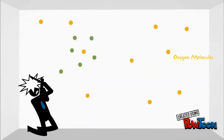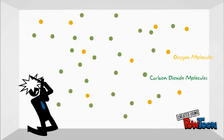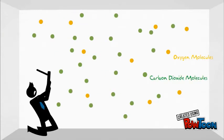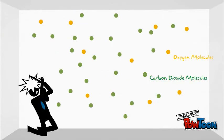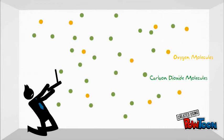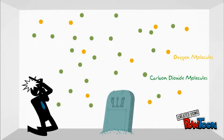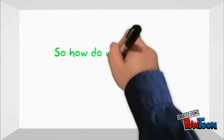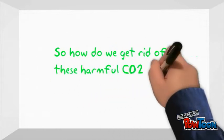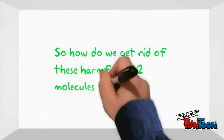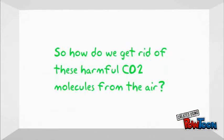Breathing in too much carbon dioxide will result in a condition known as hypercapnia respiratory failure. The body will hyperventilate and this guy will feel dizzy and panicky, eventually passing out and getting brain death. So how can we fix this problem and get rid of these harmful CO2 molecules in the air?